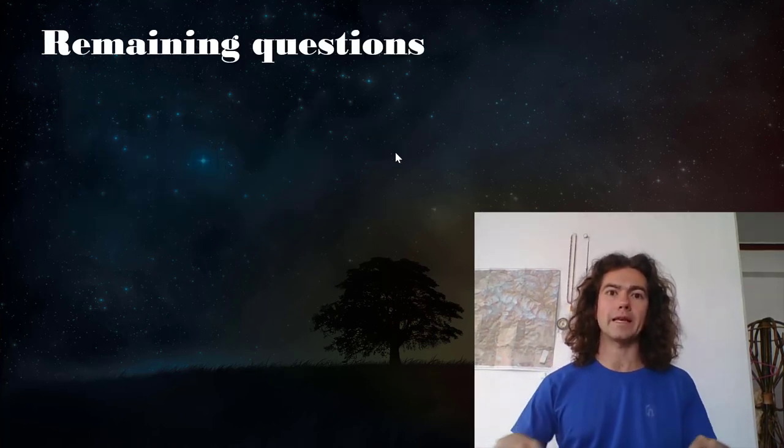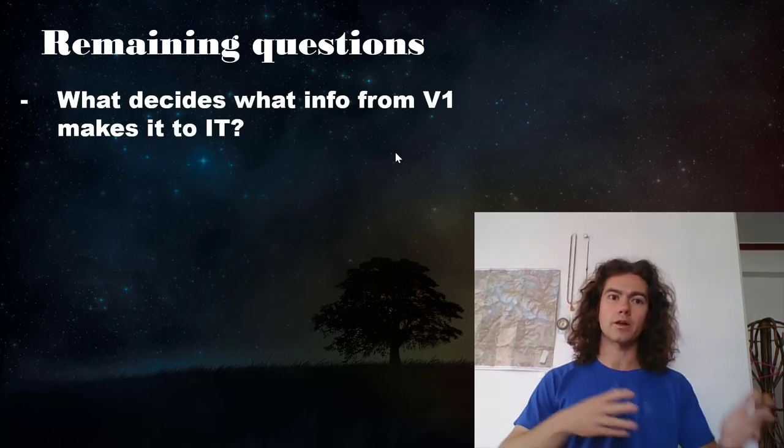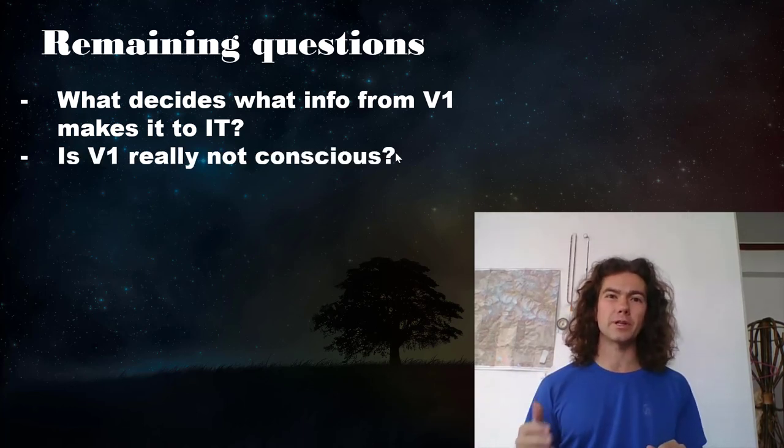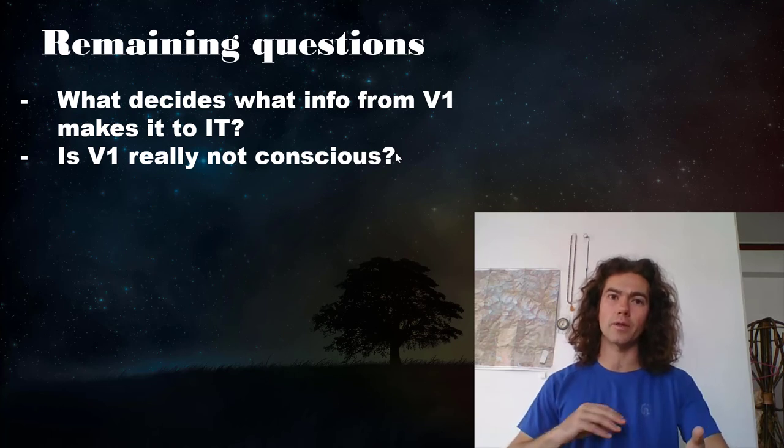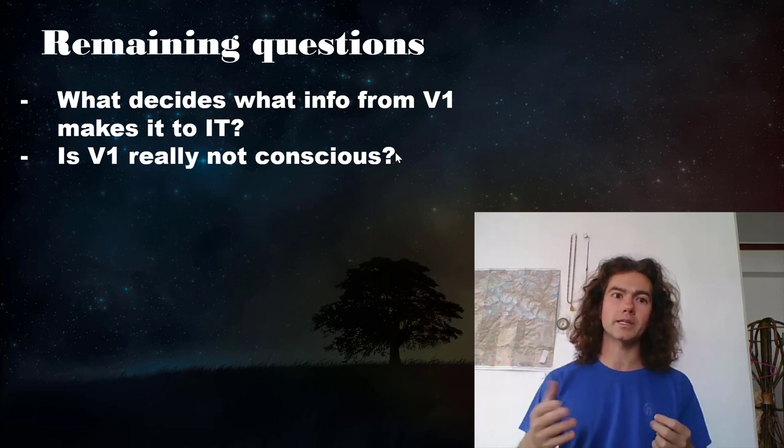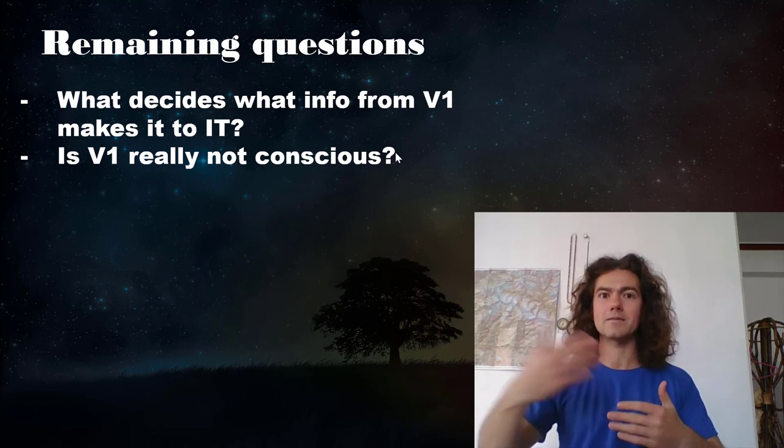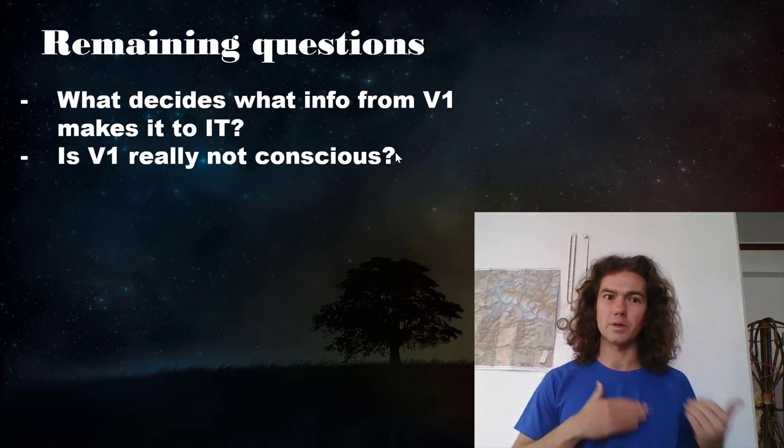But there are some remaining questions for us to think about. So what decides what info from V1 makes it into IT? Is V1 really not conscious? Are we really unaware of the things that are in V1? And how do we transition information that's in V1 that's necessary to reach our conscious perception? I mean, if the monkey doesn't get that information about the oriented grating from V1, he's never going to become conscious of it. So the information is making it into consciousness from V1, but is it really not conscious at the stage of being in V1?